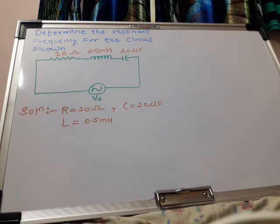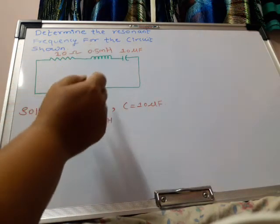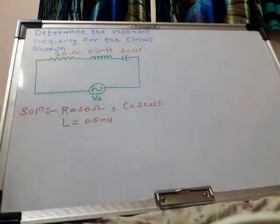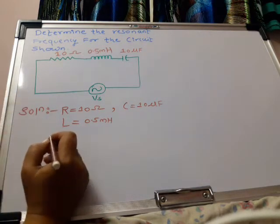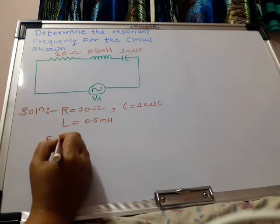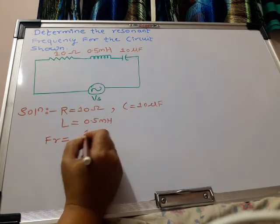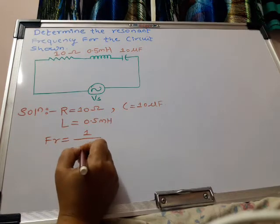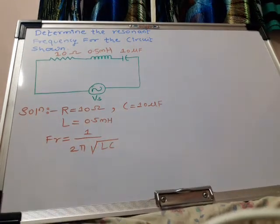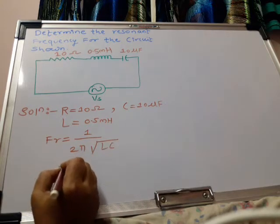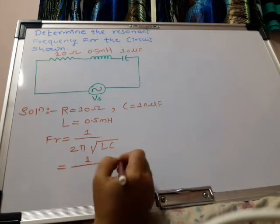This circuit is a series resonant circuit where everything is connected in series—supply as well as R, L, and C. We can solve this numerical based on the series resonance frequency formula. We know frequency of resonance is given by 1 over 2π times the square root of LC.